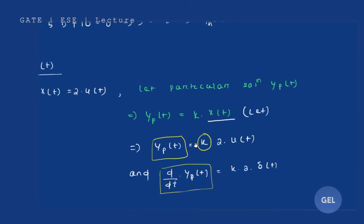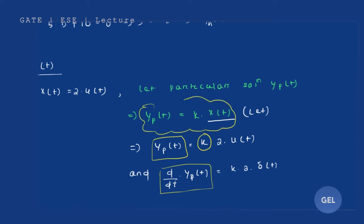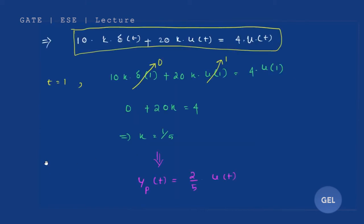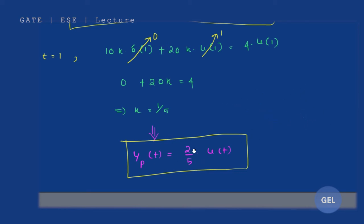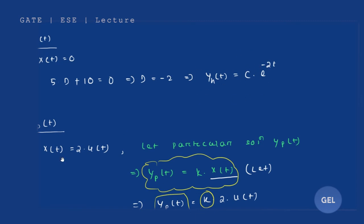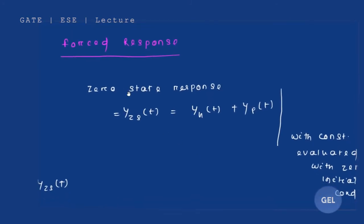We got k = 1/5. Since y_p(t) = k · x(t) and x(t) = 2·u(t), substituting gives y_p(t) = (1/5) · 2 · u(t) = 2/5 · u(t). So we have the homogeneous solution C · e^(-2t) and the particular solution 2/5 · u(t).